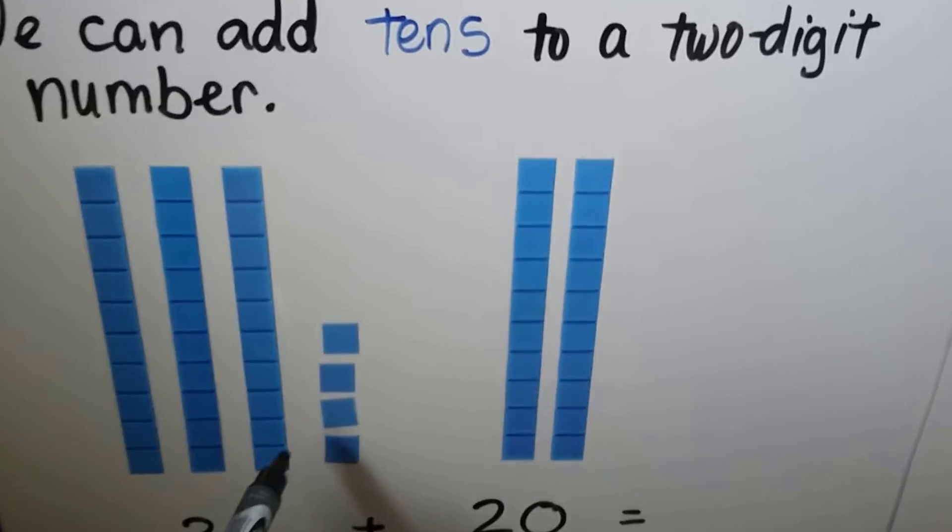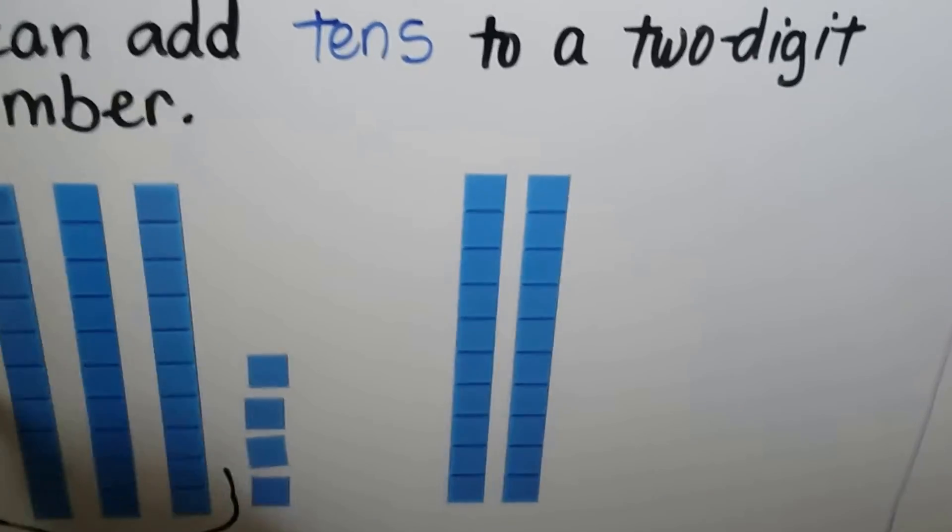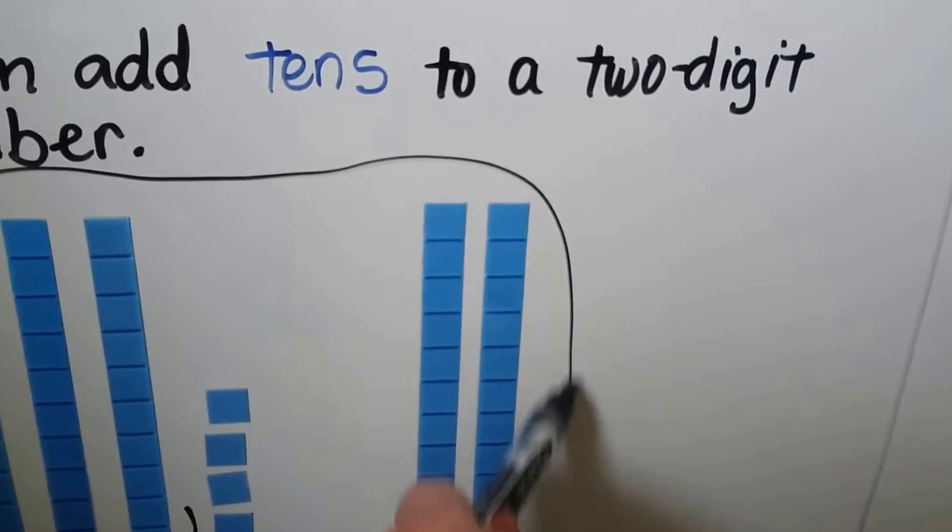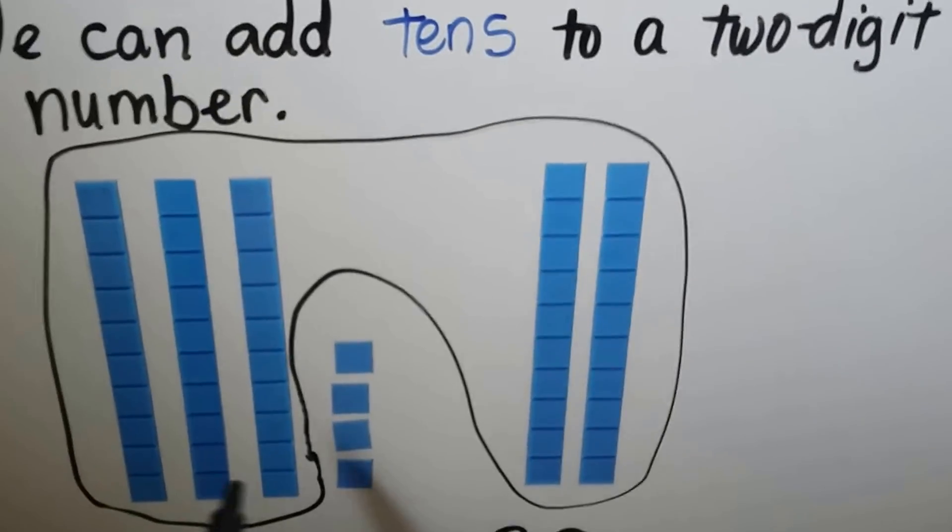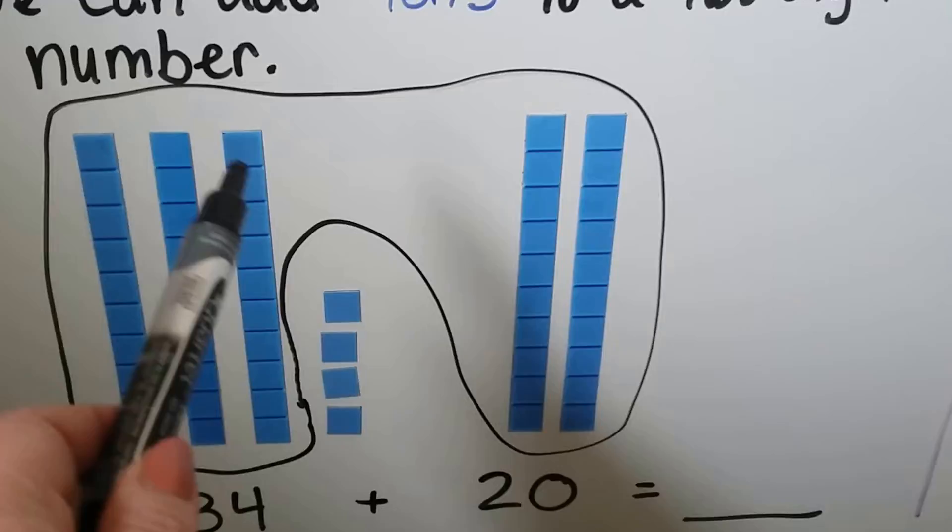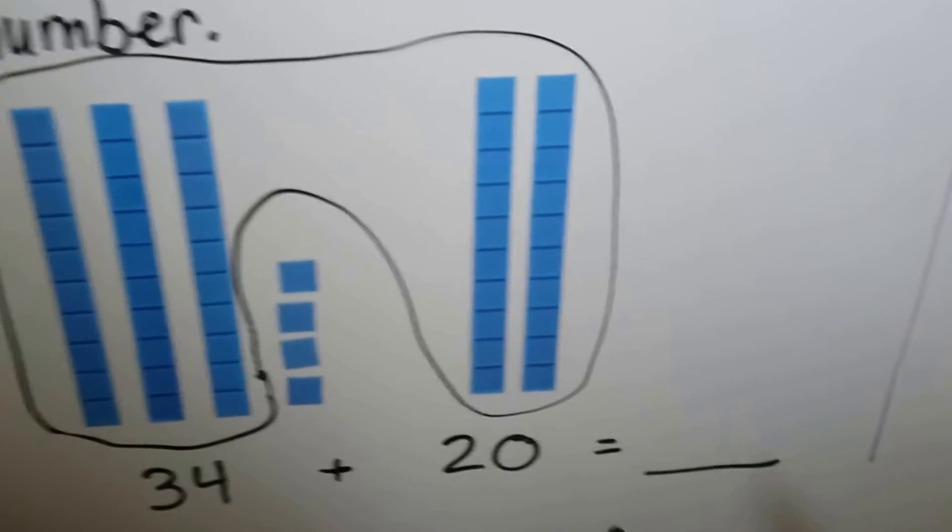We can group the 10s together into one big group. We don't group the 1s, and we have 1, 2, 3, 4, 5 tens.